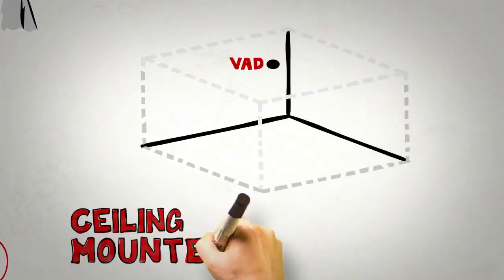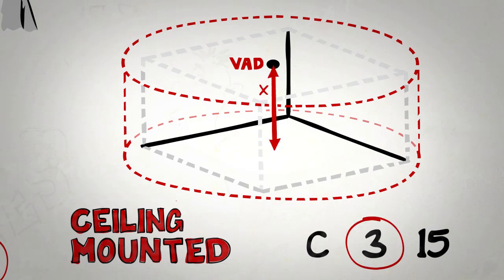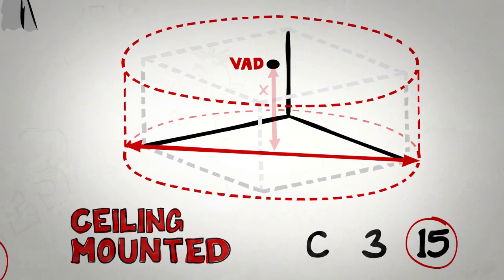The light level for a ceiling-mounted VAD is measured in a cylindrical shape. Here, manufacturers will show you a code like this one, where C stands for ceiling category. 3 is the maximum height at which the device should be mounted, and 15 refers to the diameter of the cylindrical area covered. In this instance, 15 meters.